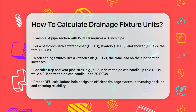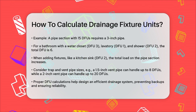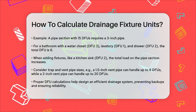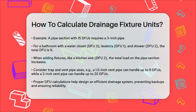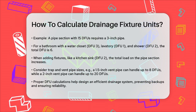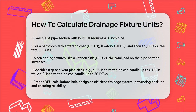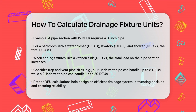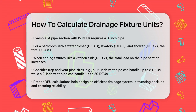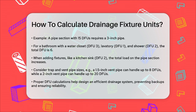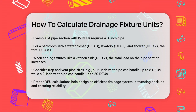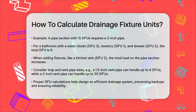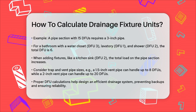Additionally, you need to consider the size of the traps and vent pipes. For instance, a 1.5-inch vent pipe can connect up to eight DFUs, while a two-inch vent pipe can handle up to 20 DFUs.